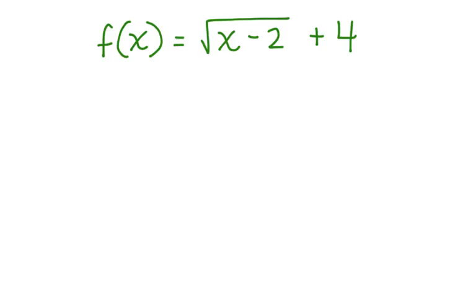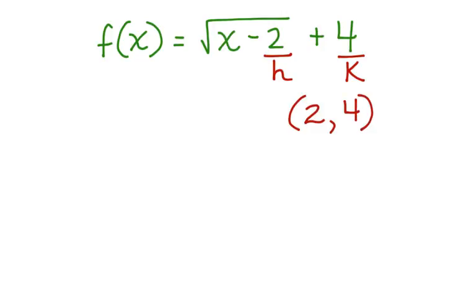What about this one? f(x) = √(x − 2) + 4. Now we have a value for h and a value for k. We put two in for h and four in for k, and our origin is at (2, 4). By using this form of the square root function, we can easily determine the origin for our graph.